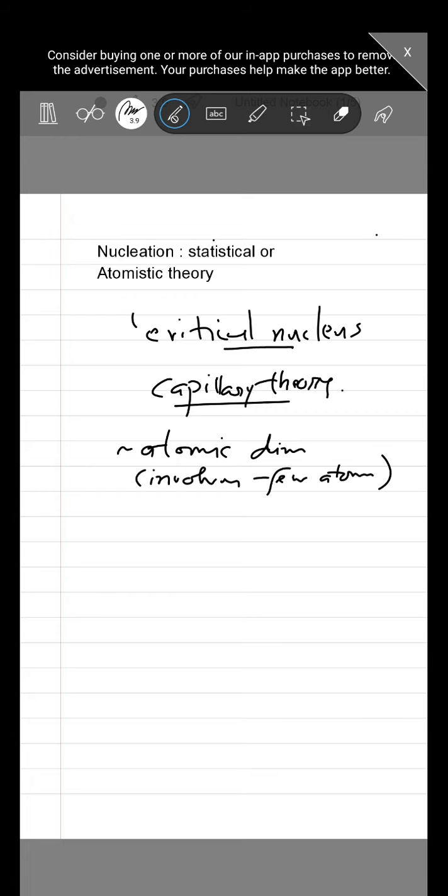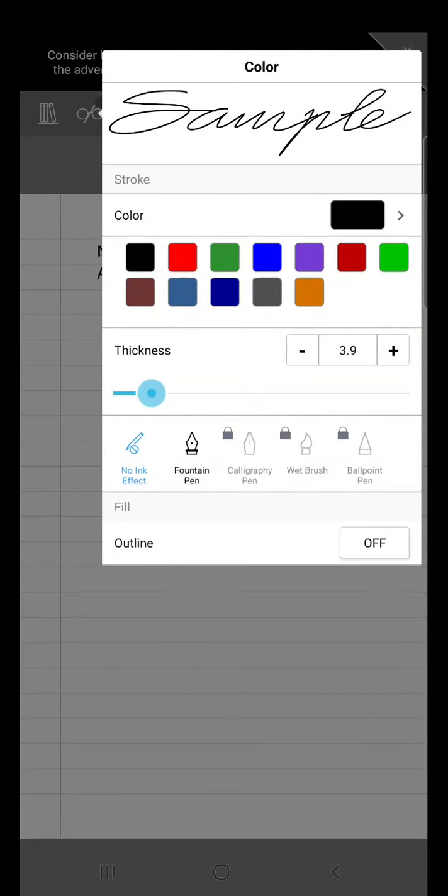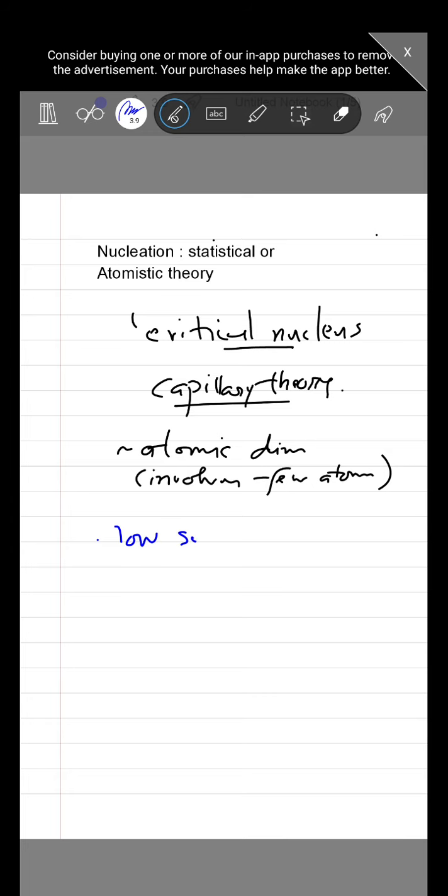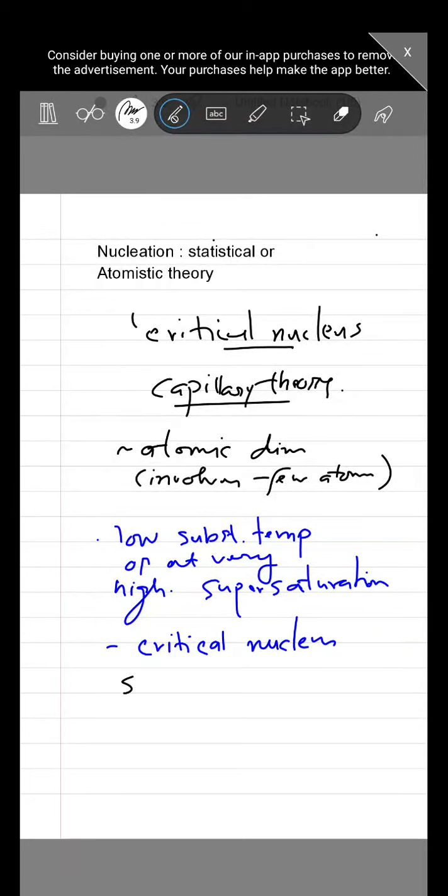Now, at low substrate temperature, we go to a very low substrate temperature. Or we can say, at very high supersaturation. The critical nucleus is a single atom. This atom is actually a single atom which forms a pair.